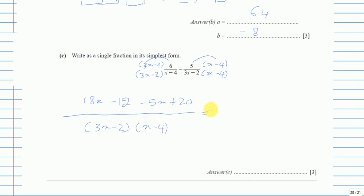We can simplify: 18x minus 5x is 13x, and -12 plus 20 is +8. The base is (3x - 2)(x - 4).